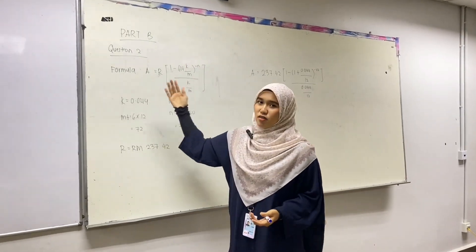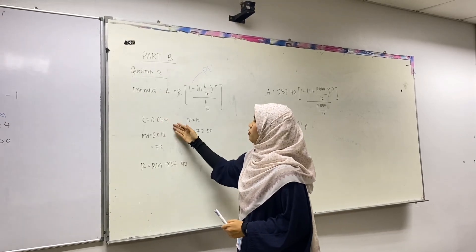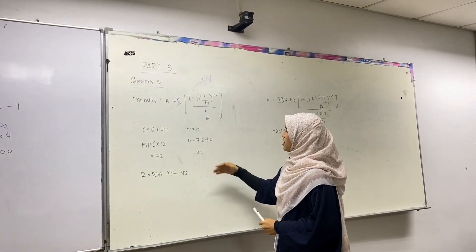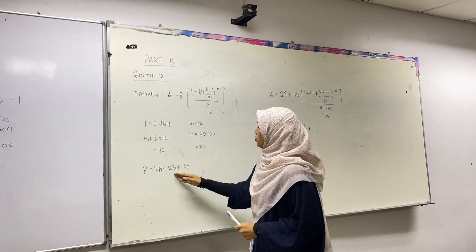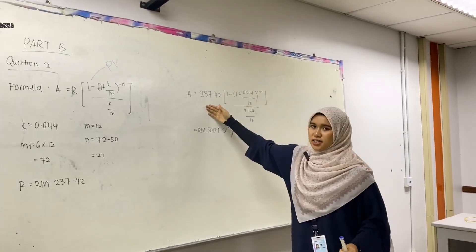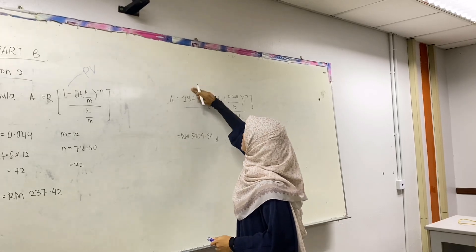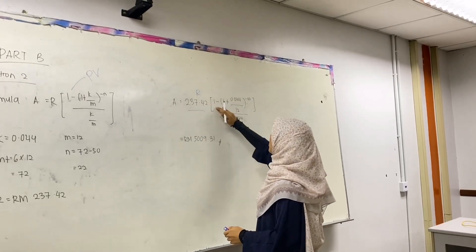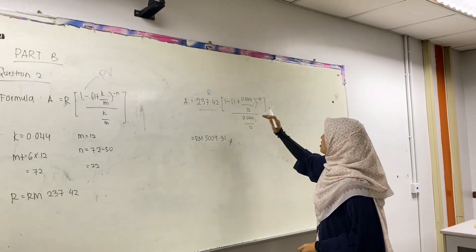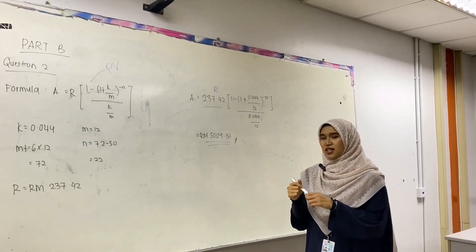This is Part B question 2. This is the formula for present value. As you can see, K is 0.044, M is 12, MT is 6 times 12 and we can get 72, N is 72 minus 50 we can get 22, and the R is RM237.42. We just fill in all of this in this formula. As you can see right now, we can fill in all in the formula. This is for the A, this is for the R. Just write it back: 1 plus 0.044 per 12 for K/M. This is for negative N and also the above, 0.044 per 12. The last answer we can get is RM5,009.31. That's all for me.